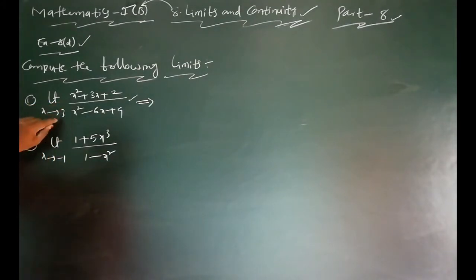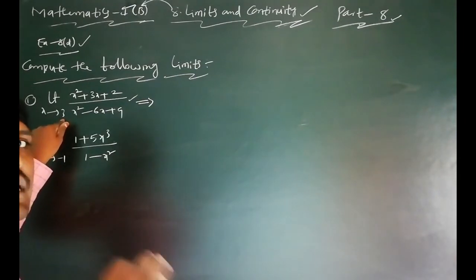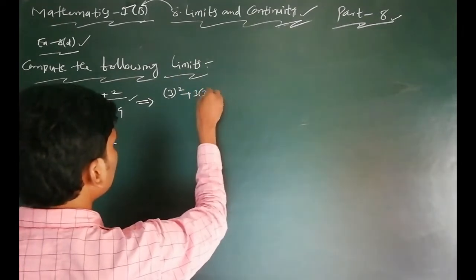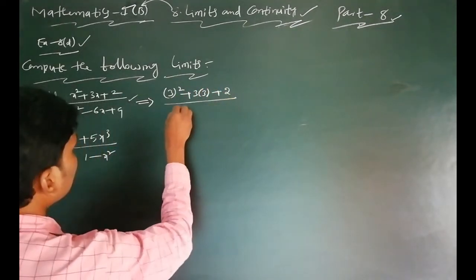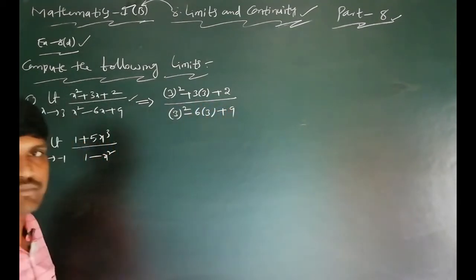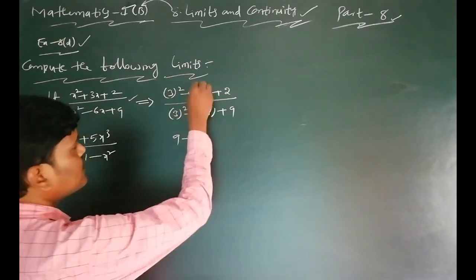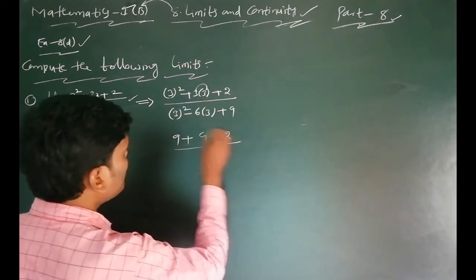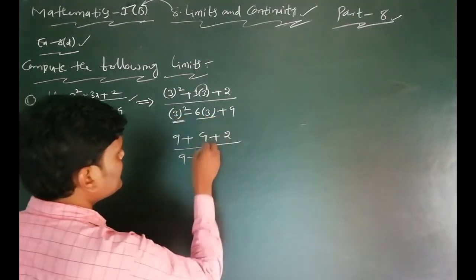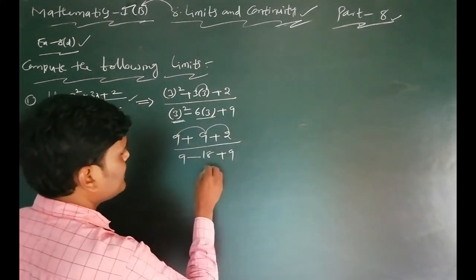Limit x tends to 3: in place of x, write 3. So we get 3 squared plus 3 times 3 plus 2, all over 3 squared minus 6 times 3 plus 9. That gives 9 plus 9 plus 2 in the numerator: 9 plus 9 is 18, and 18 plus 2 is 20.